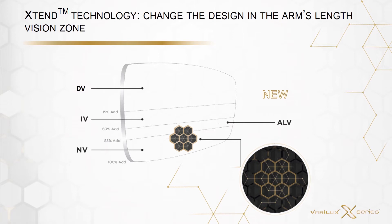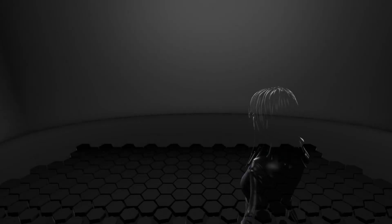What matters for this spherical part, which is at arm's length, is a place we call the arm's length vision zone. It's basically between 60 and 85% of the addition to be added to the lens, which equals a distance between 40 and 70 centimeters from the wearer.